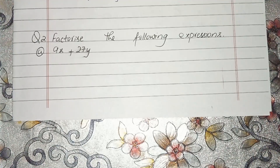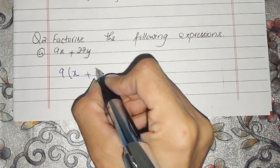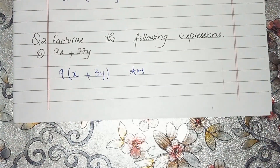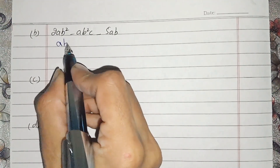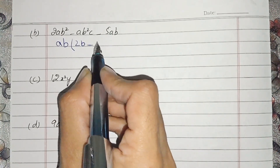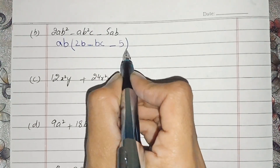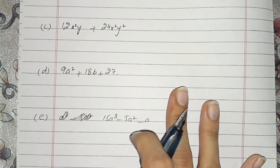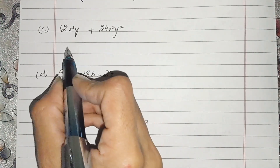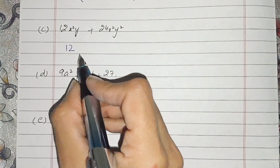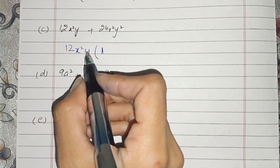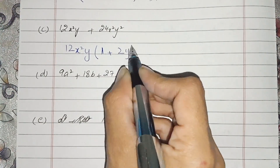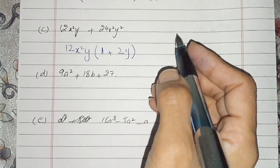Now question number 2: factorize the following expressions. Same as before, we have to see the common factor. Here 9 is common — 3 times 9 is 27 — and left is x plus 3y. This is the answer of part a. In part b, the common factor is a, and that is the answer of b part. In c part, x squared is common in both, and left is 1.